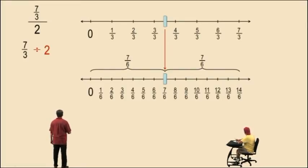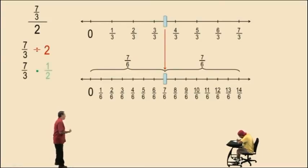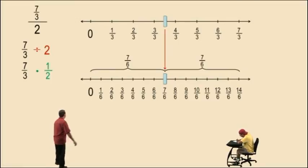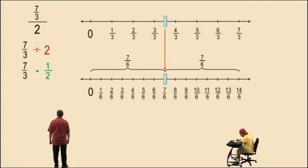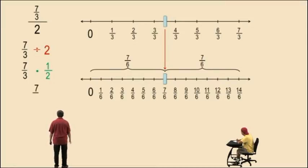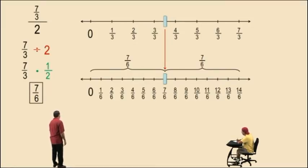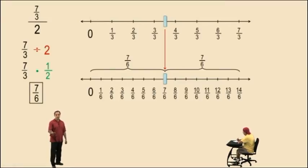Now, how do we perform the calculation arithmetically? We have seven-thirds and we change it to multiplying by the reciprocal of two, which is one-half. And now, if we perform the multiplication — multiply straight across the top and straight across the bottom — we do get seven-sixths, which is what we got doing the calculation on the number line.